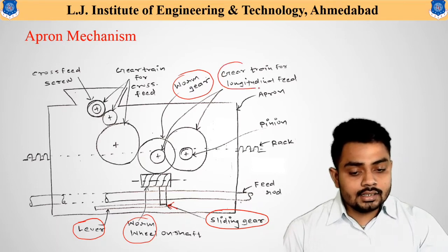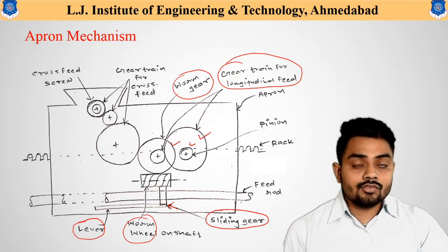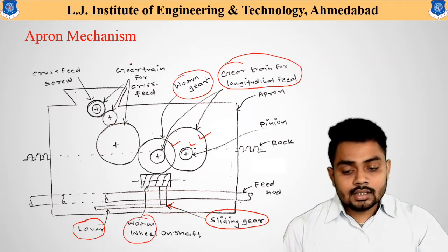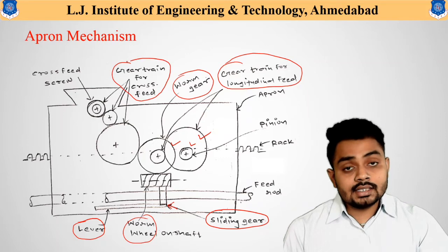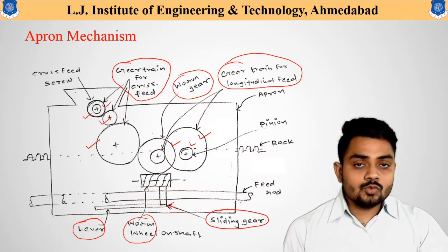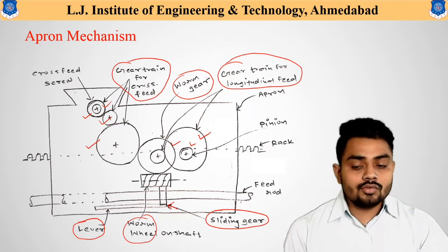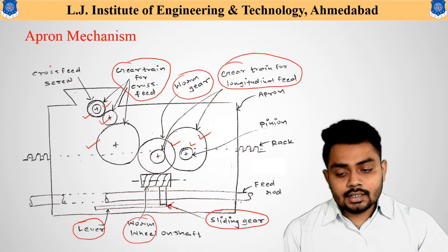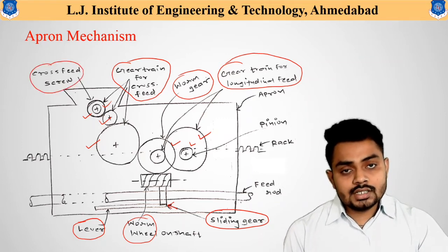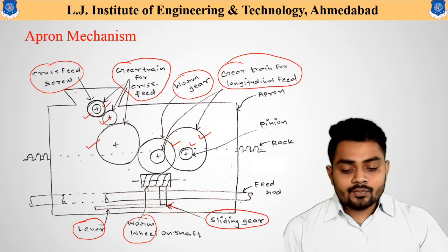There are two main gear train sections. The first is the gear train for longitudinal feed — all gear combinations shown here constitute that gear train. Similarly, there is a gear train for cross feed, which provides crosswise movement. At the end, the cross feed screw provides crosswise movement to the cutting tool.